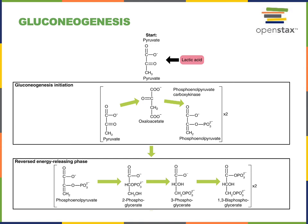We previously discussed lactic acid fermentation following glycolysis in anaerobic cellular respiration. Lactic acid is a waste product of a cell that's carried out anaerobic cellular respiration. However, lactic acid can serve as a starting point for a cell to produce new glucose in gluconeogenesis.